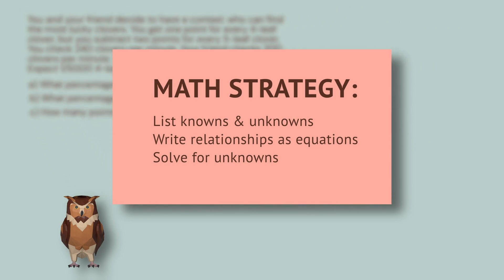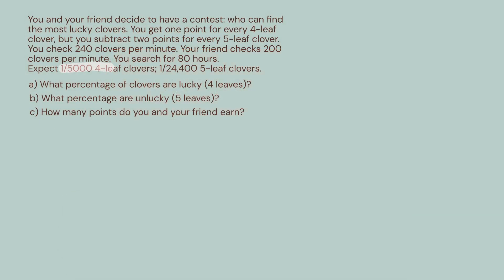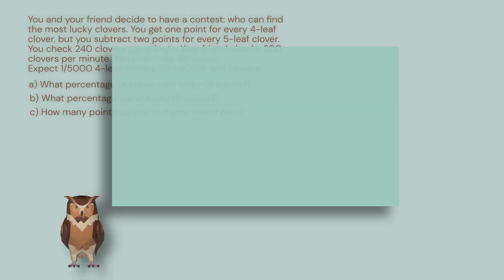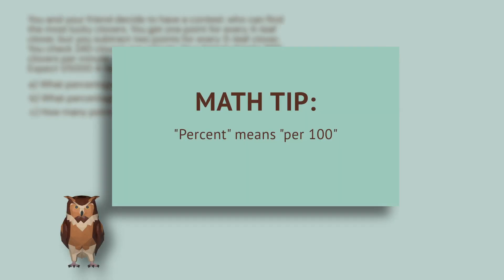Then we can solve for the unknowns. We know that one in 5,000 clovers have four leaves. We can convert that to a percentage. Sometimes people try to memorize a method for converting to percents, but they can mess up that way if they don't know what percent actually means. It literally means per 100. In other words, if one in 5,000 clovers have four leaves, how many would you expect there to be in 100?